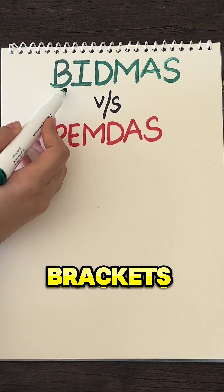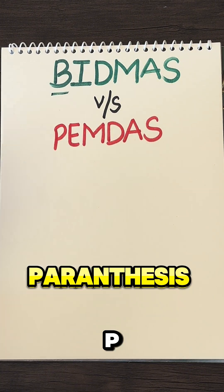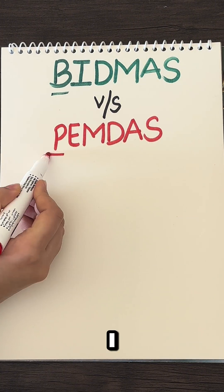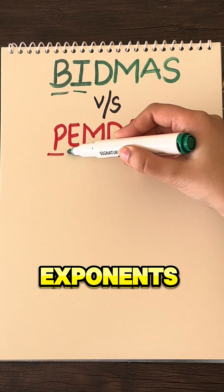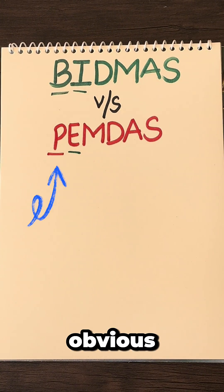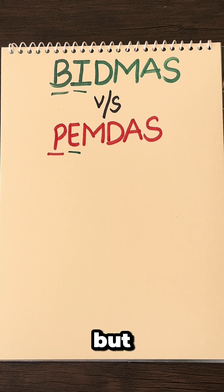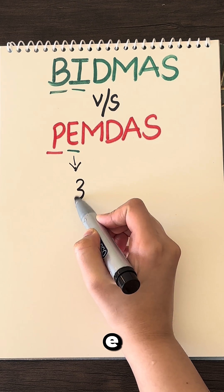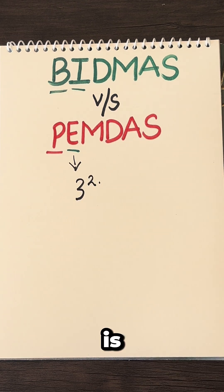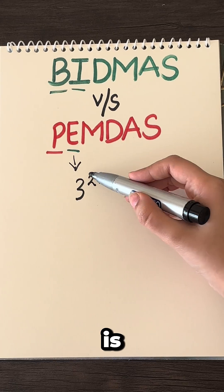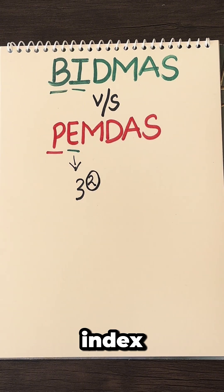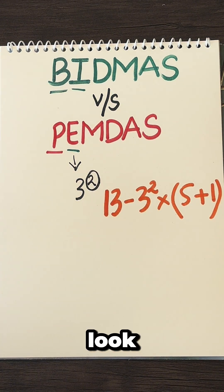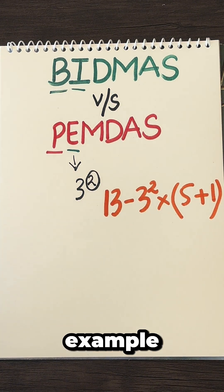B stands for brackets, P for parentheses, I for indices, E for exponents. These are obvious, but I and E just look something like this — which is 3 to the power of 2, where this is known as an exponent or index. So let's take a look at this example.